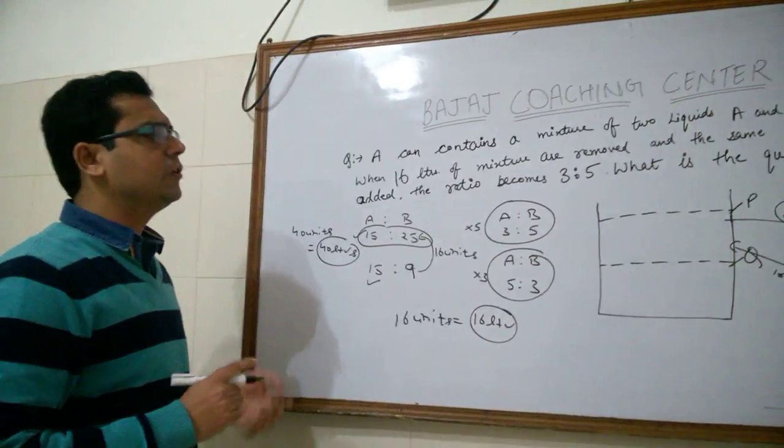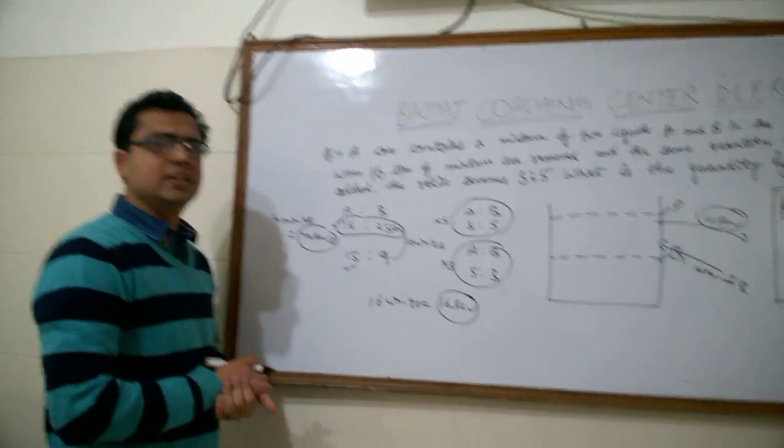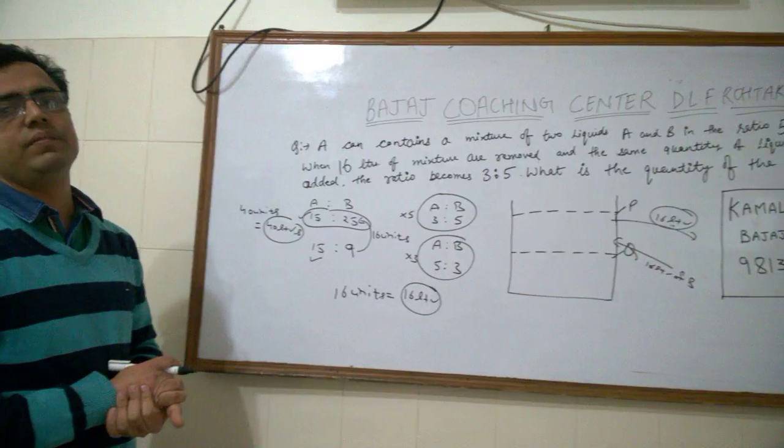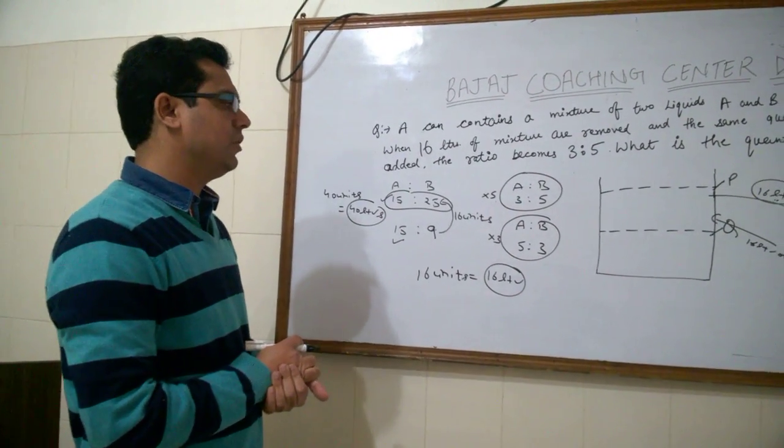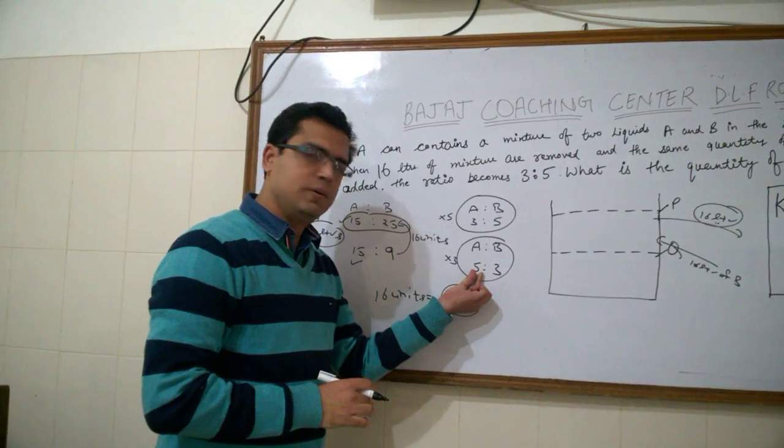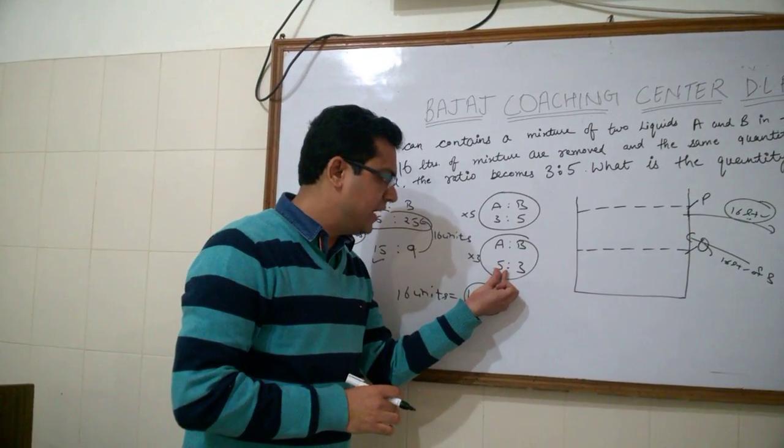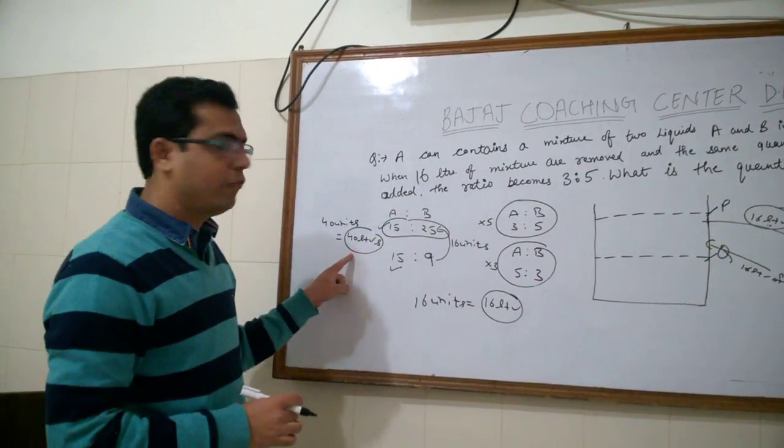Now, suppose, if the question was there, that what is the initial quantity of A? Then what we can do in this question? The initial quantity of A was 5 by 8, 5 by 8 of 40.